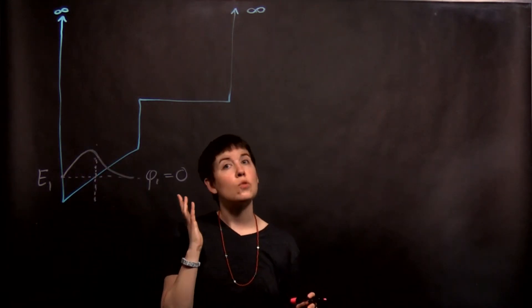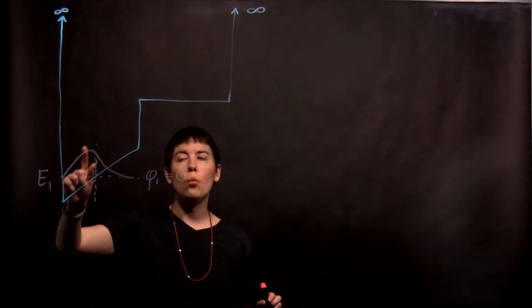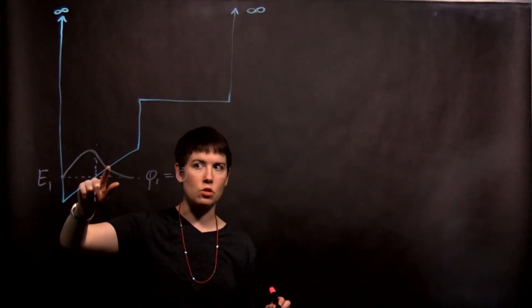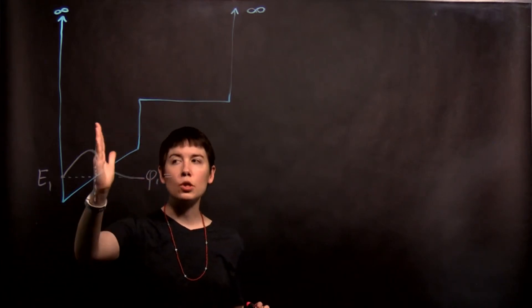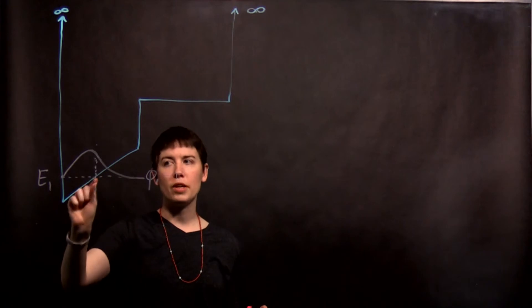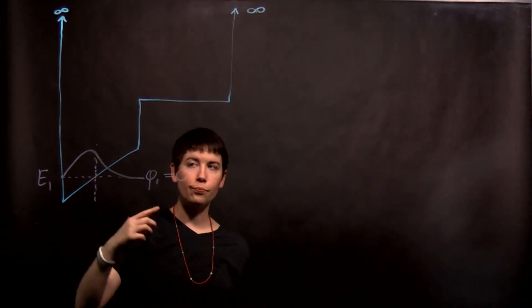One mistake that I see students make is that they wait until the wave function has crossed the potential and then say, now it's exponential. That's not true. It's going to switch from sinusoidal to exponential where the energy line crosses the potential.